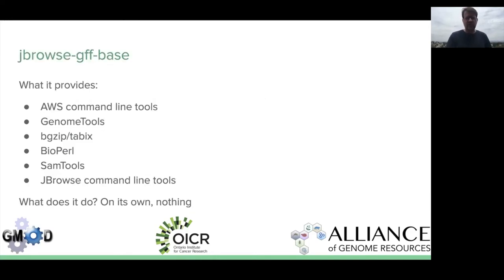First, jbrowse2gffbase. It provides a lot of things: AWS command line tools, genome tools, bgzip and tabix from Jim Kent's software tools, BioPerl, SAM tools, and the JBrowse command line tools.